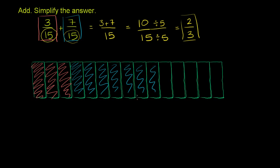And you see now, if you take the orange and the blue, you get 1, 2, 3, 4, 5, 6, 7, 8, 9, 10 of the sections. Or 10 of the 15 sections.